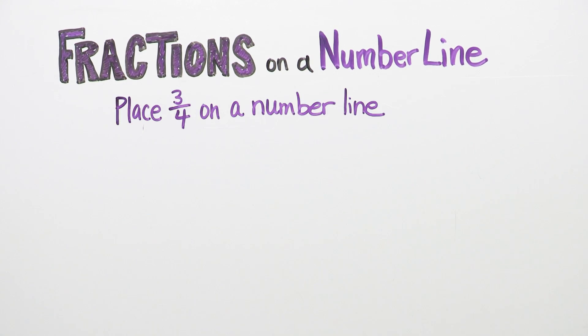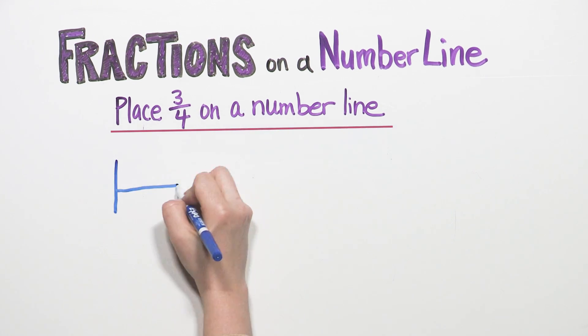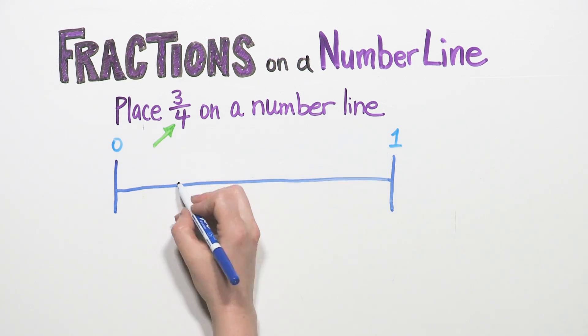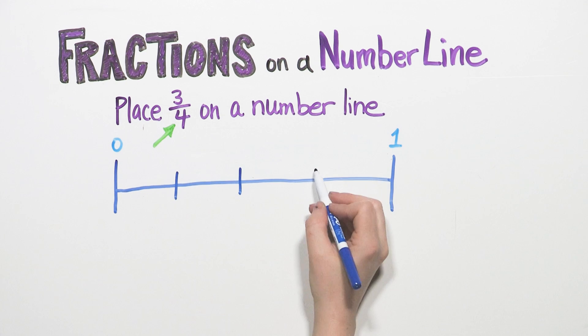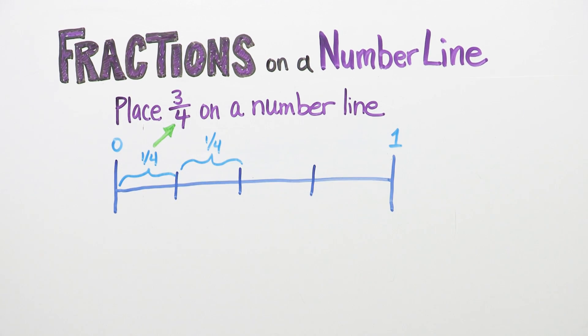Let's try one. Place three-fourths on a number line. Three-fourths is between zero and one. The four in the denominator tells your child to partition, or break, the number line into four equal parts. She will recognize that each part is one-fourth of one whole.